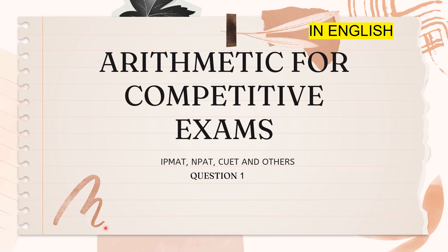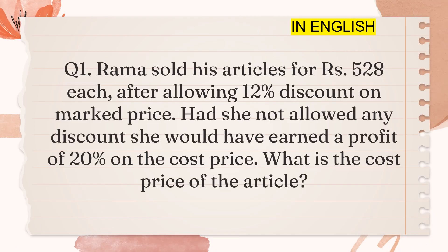Arithmetic for competitive exams. We shall be solving a question. Rama sold all his articles for 528 rupees each after allowing a 12% discount on the marked price. Had she not allowed any discount, she would have earned a profit of 20% on the cost price. You have to calculate the cost price of the article.